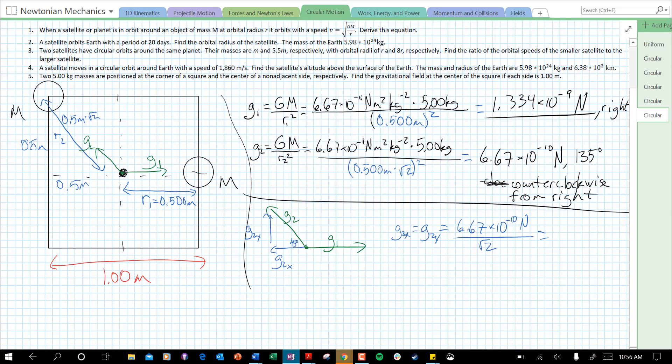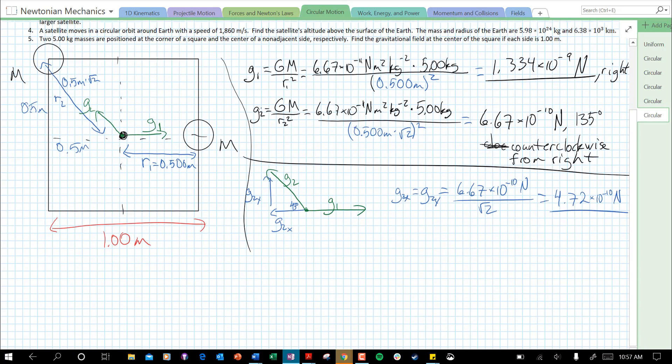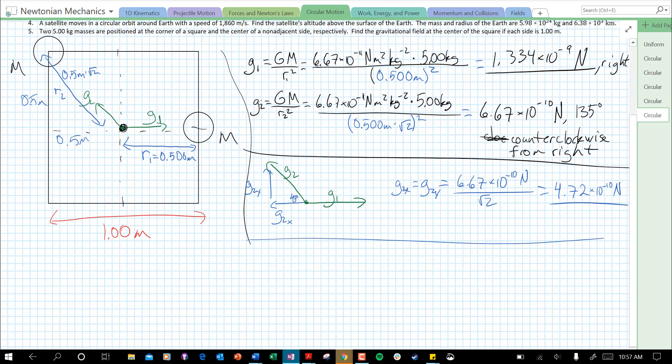Because it's a special right triangle. Which gives me 4.72 times 10 to the minus 10 newtons for both of our components.